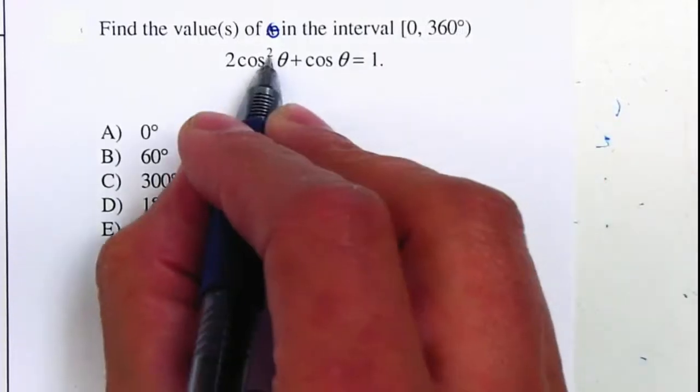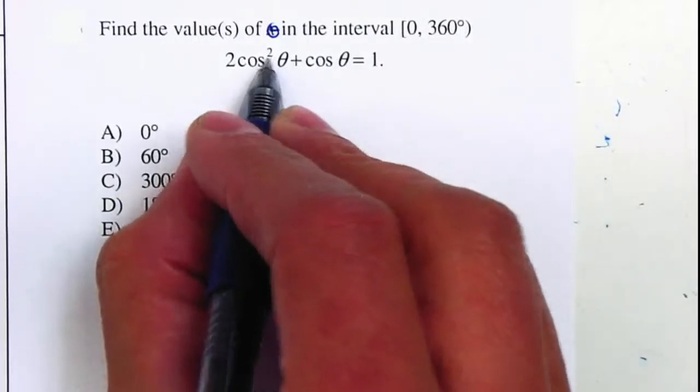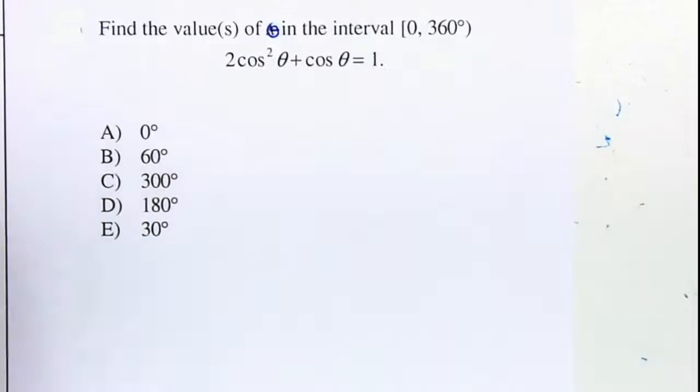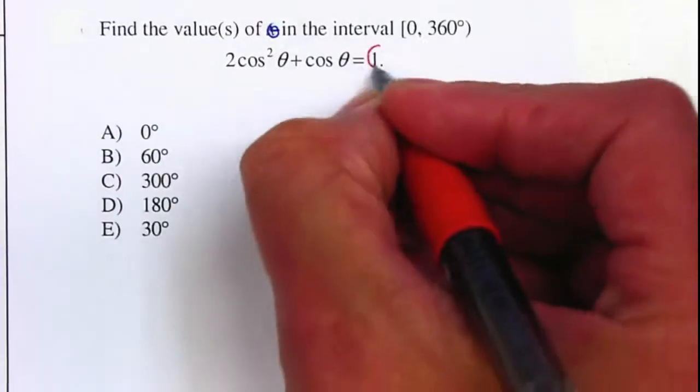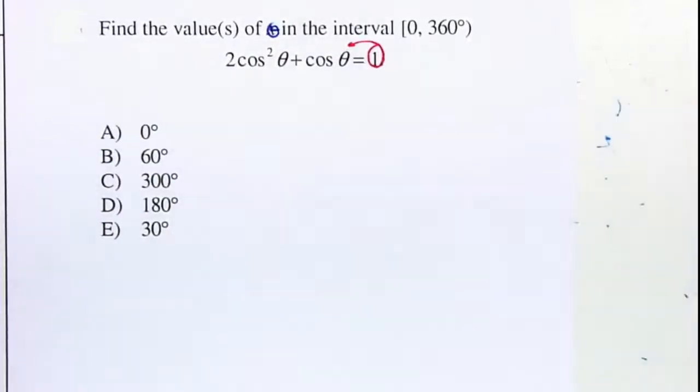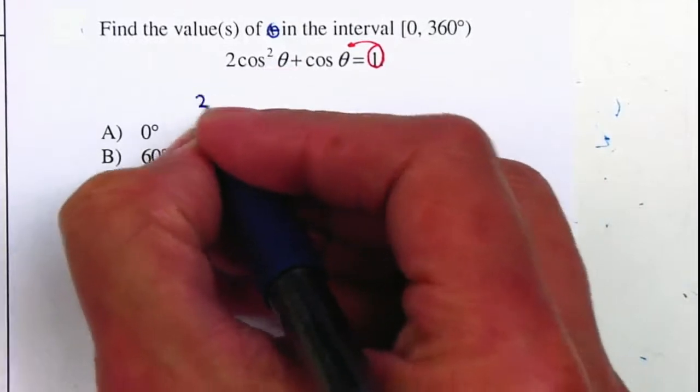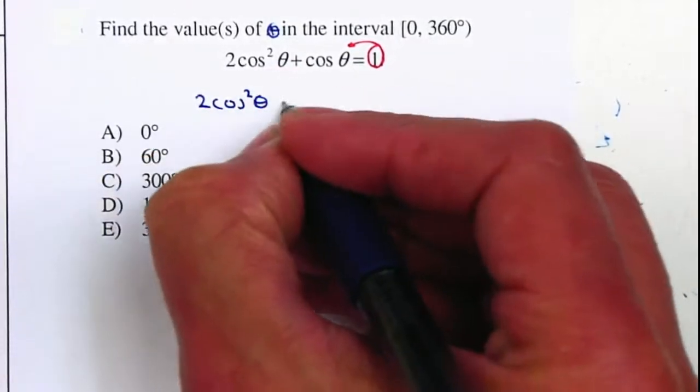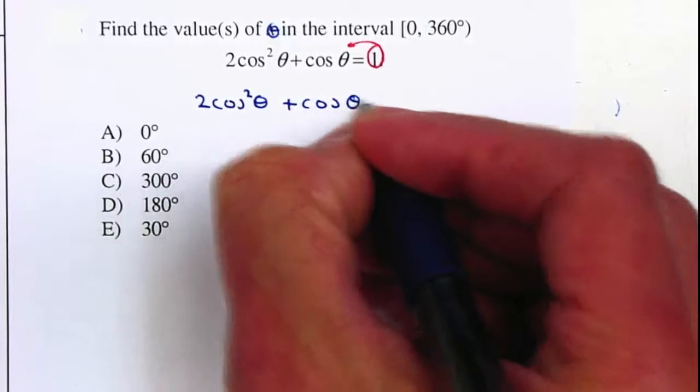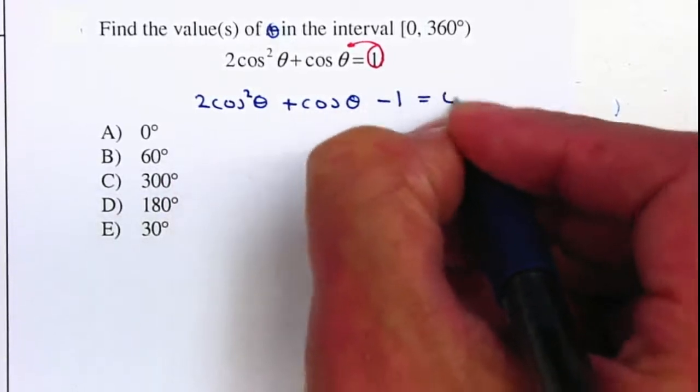I have a quadratic equation. Whenever you have a quadratic equation you want to make it equal to 0. So therefore I'll move my 1 to the left as a positive becomes a negative. You want to write down your square first, so we have 2 cosine squared theta plus cosine theta minus 1 equal to 0.